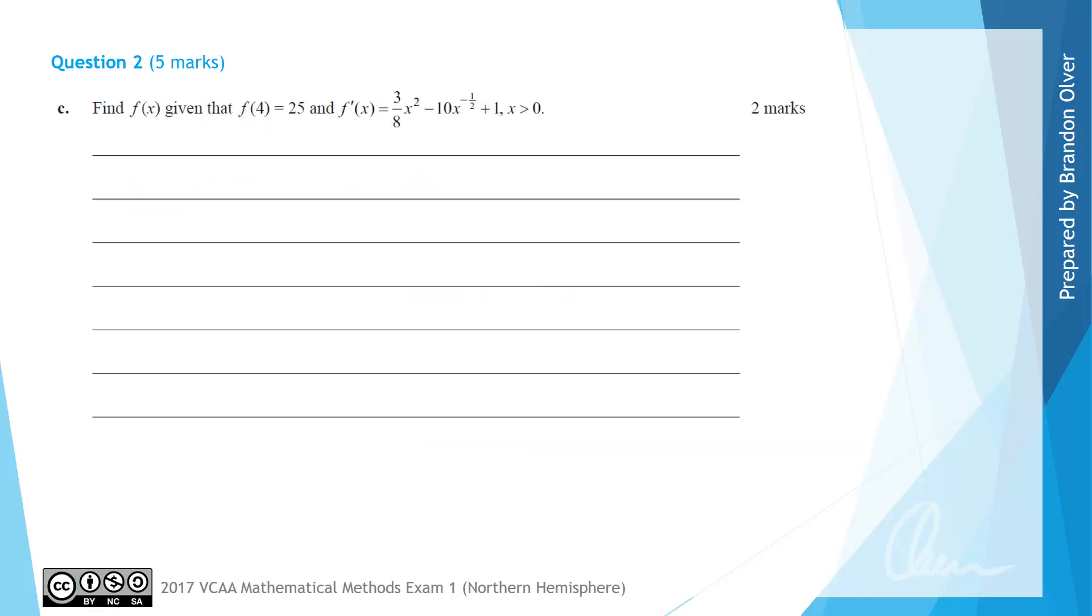For part C we want to find f of x given that f of 4 equals 25 and that the derivative f dashed of x has an expression 3 divided by 8x squared minus 10x to the power of negative 1 half plus 1 where x is greater than 0. To calculate f of x we can find that by antideriving f dashed of x. So we're going to find the antiderivative of 3 over 8x squared minus 10x to the power of negative 1 half plus 1 with respect to x.